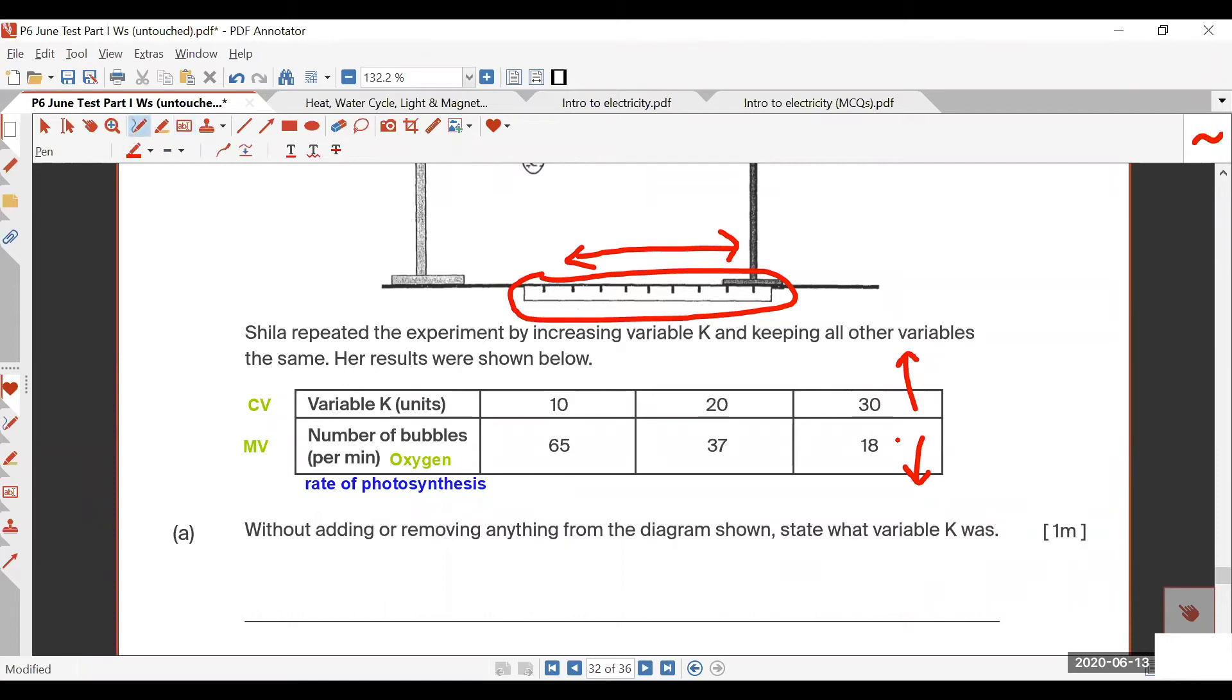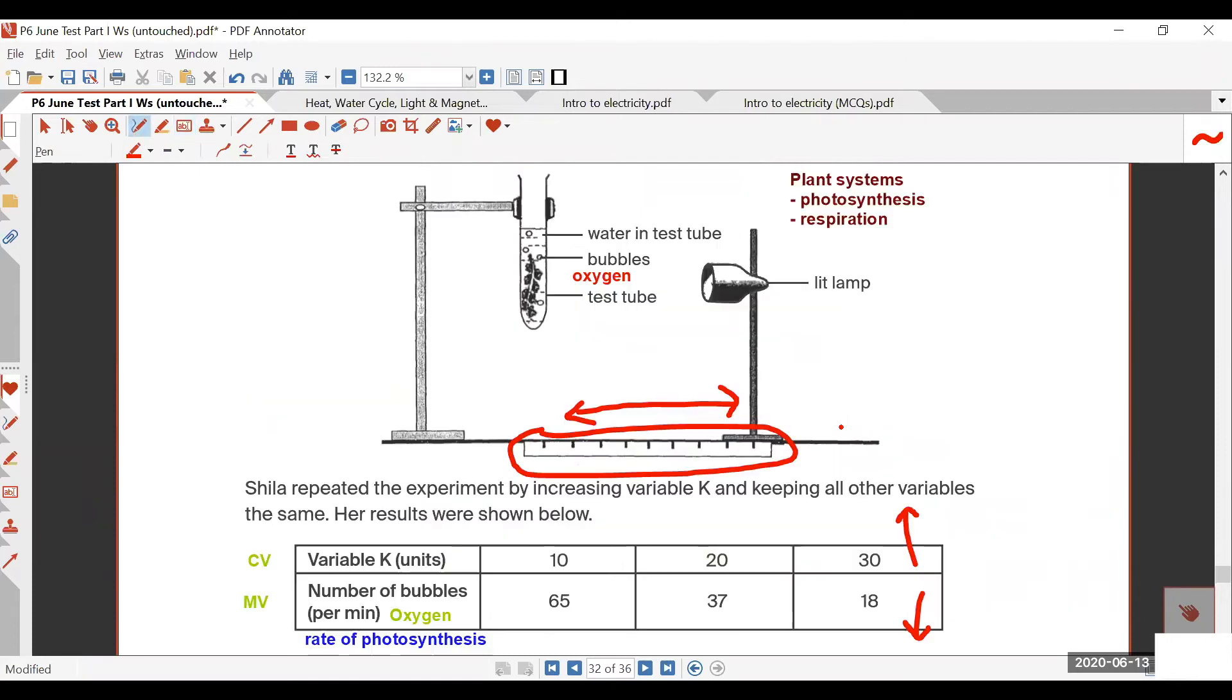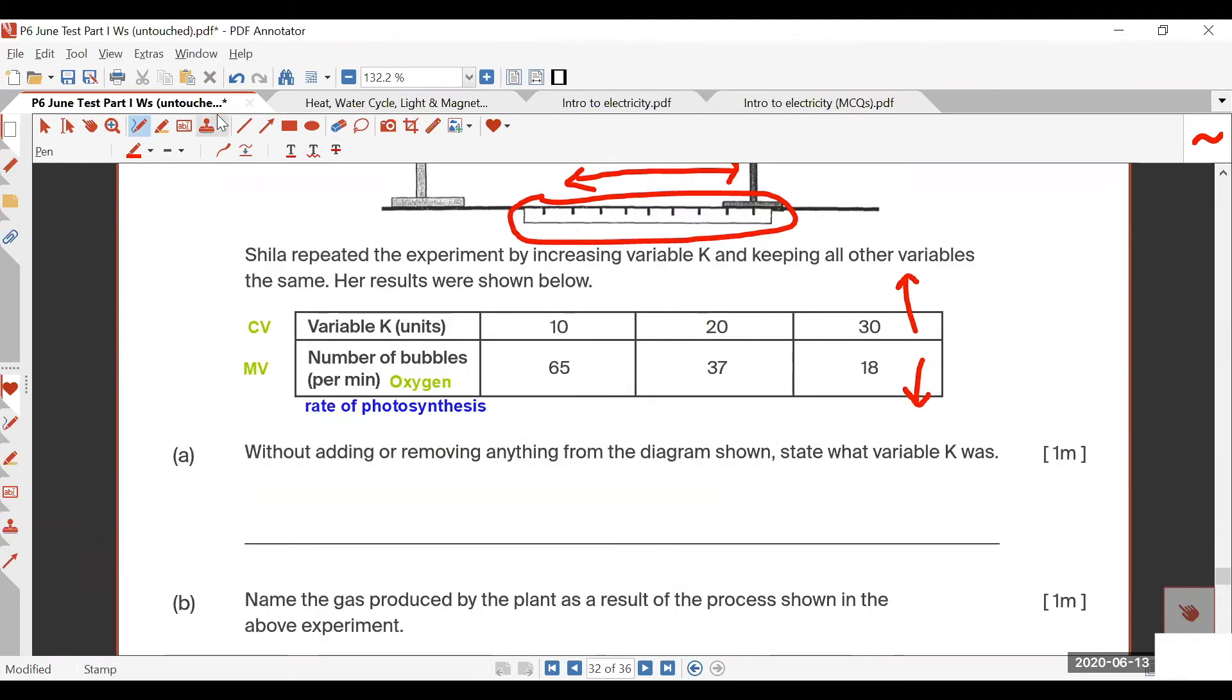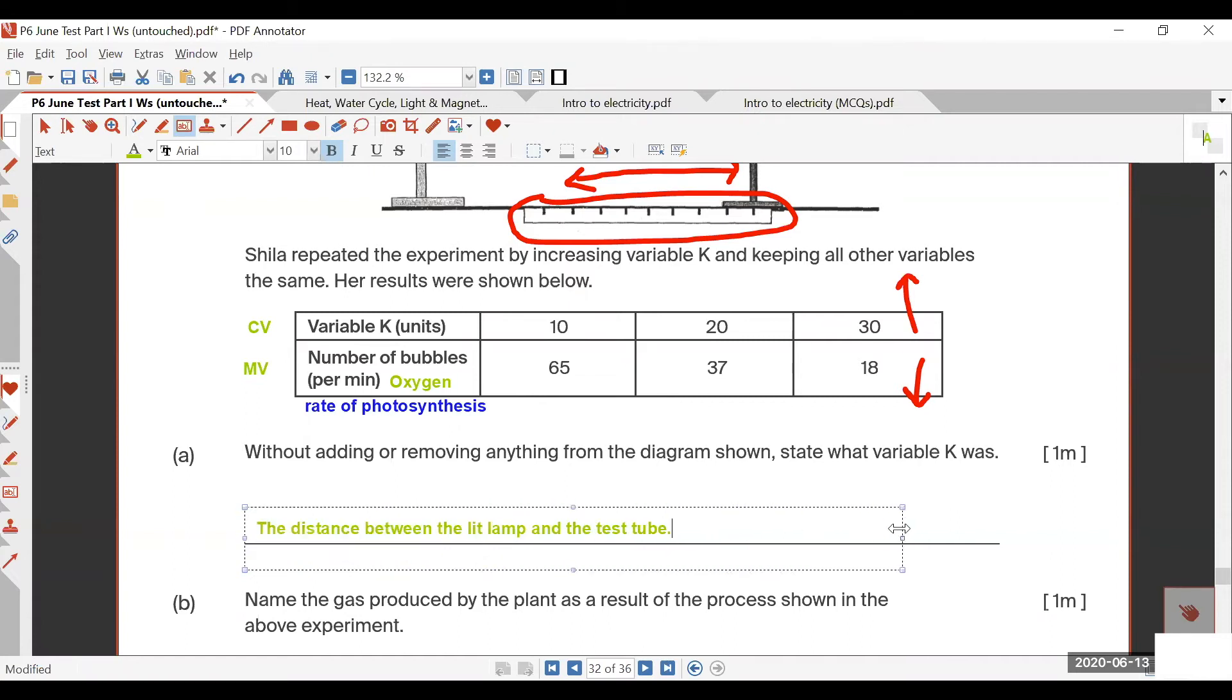So as the rate of photosynthesis decreases, as my variable K increases, because I have the distance far away, my lamp goes further, the lesser light received by the plant. So what's variable K? Just tell me, distance between the... it's the words in the question.